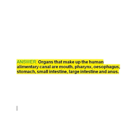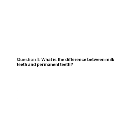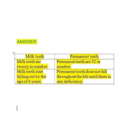Question number four: What is the difference between milk teeth and permanent teeth? When there is a word 'difference,' draw a line in between the two columns. Under milk teeth: milk teeth are 20 in number. Under permanent teeth: permanent teeth are 32 in number.